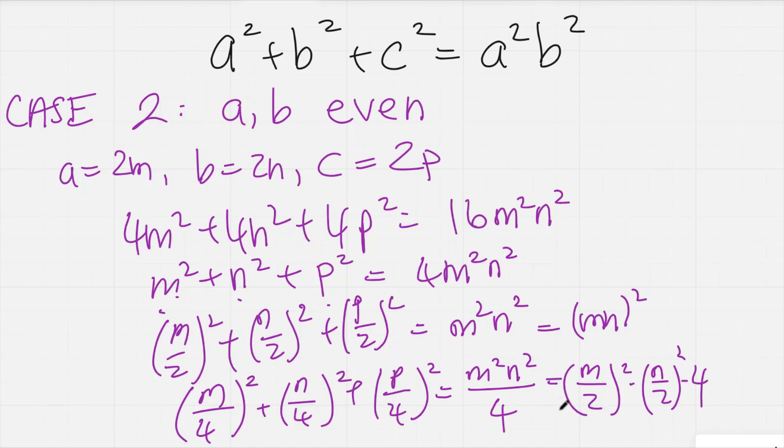So that means—I mean, you can clearly see this is a multiple of 4 anyway. So that means this is a multiple of 4. So this is a multiple of 4. So that means that m/4 is an even number, n/4 is an even number, and p/4 is an even number.